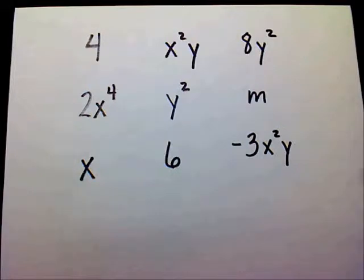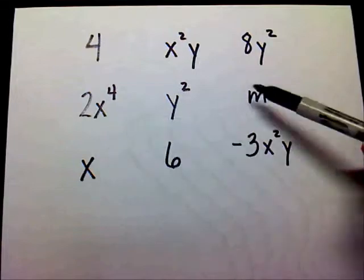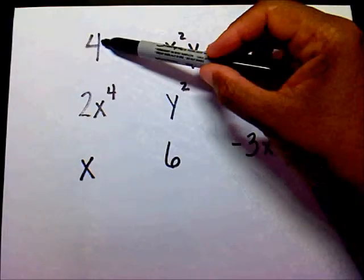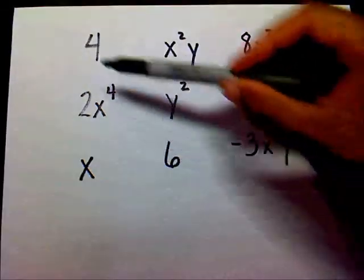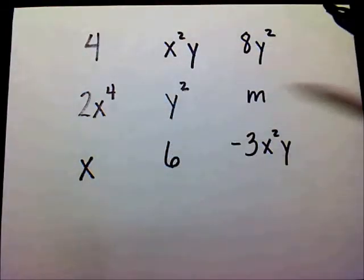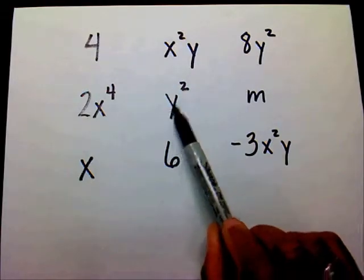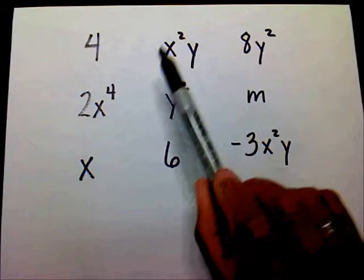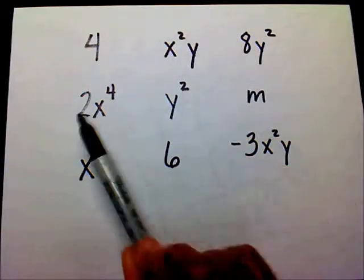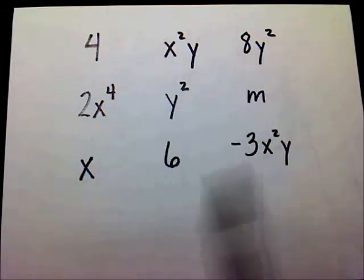Terms can be either positive or negative. A term can just be one variable sitting alone by itself. A term can also be a single number sitting alone — but these are called constants. When it's just a number, they're called constants, but it's still a term. A term can be a variable with an exponent. It could also include a variable with an exponent and another variable. Or it could have a number, a variable, and an exponent. All of these are terms.